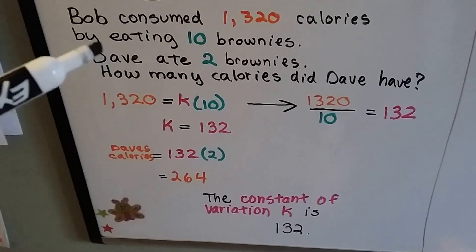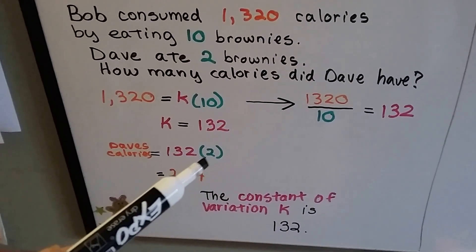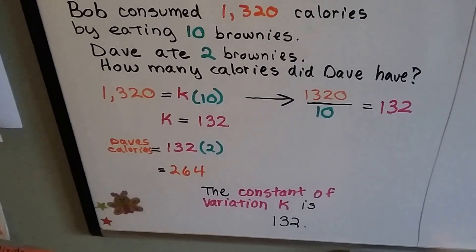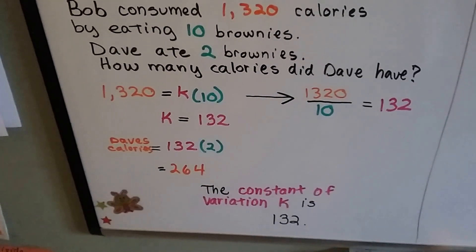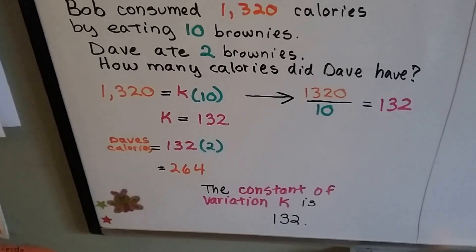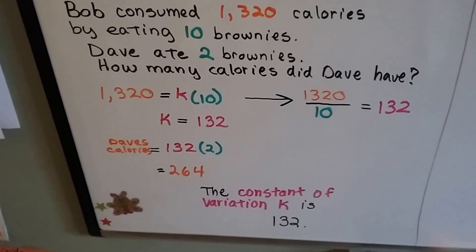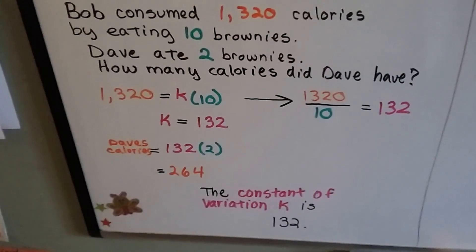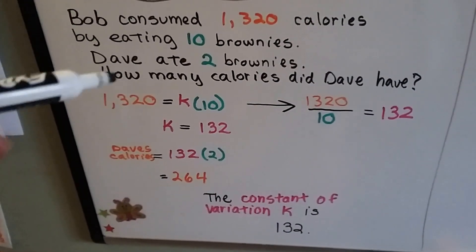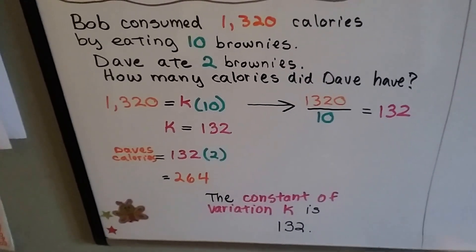1,320 divided by 10 is 132. So now we know that 1 brownie is 132 calories. And if Dave ate 2 of them, we multiply 132 times 2, and Dave's calories are 264 calories. That constant of variation, k, is 132. See how we used this one to find that one?